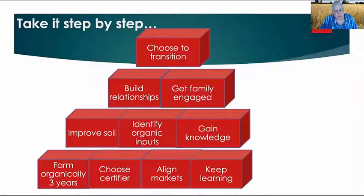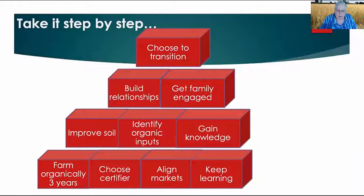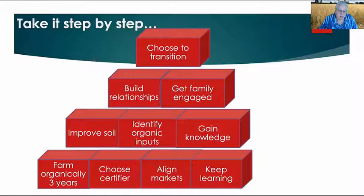Some quick steps to getting there: first, choose to transition — it's a true commitment because it takes three years from the last input to fulfill organic practice requirements before you can be certified through the NOP. Build relationships not only with your workers and markets, but with your neighbors. If your neighbors are not organic, get their support early. We hear challenges when conventional and organic farmers operate side by side; it's important to build that relationship early so they understand what you're trying to do and you build mutual respect.